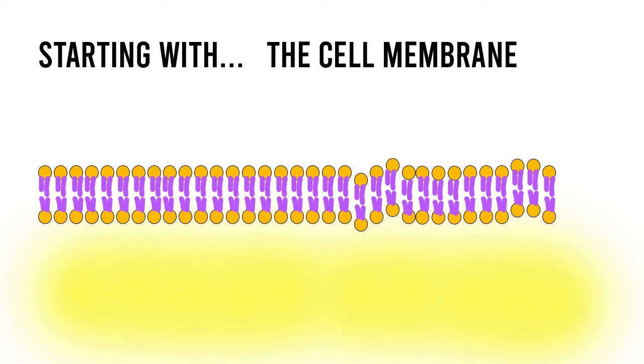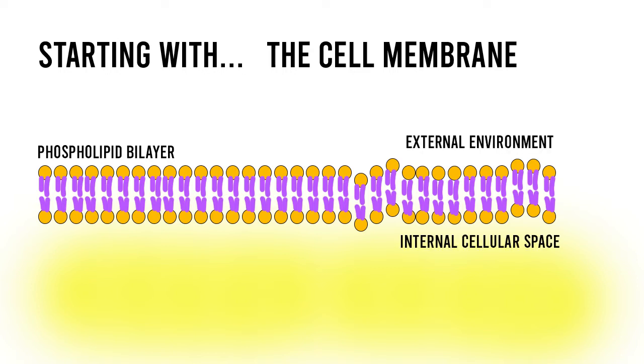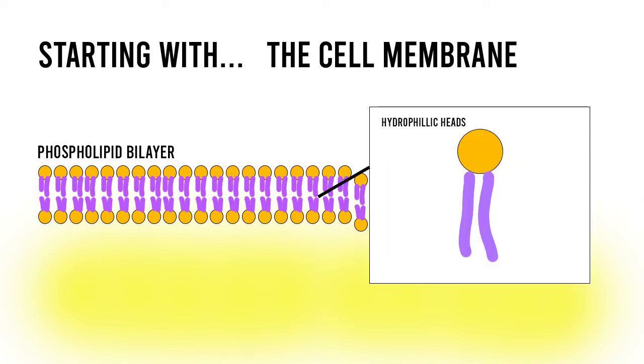Starting with the cell membrane. The cell membrane, or the plasma membrane, is made up of a phospholipid bilayer and forms a boundary separating the internal cellular space from the external environment. The phospholipid bilayer consists of hydrophilic heads, which like to interact with water, and hydrophobic tails, which don't like to interact with water.